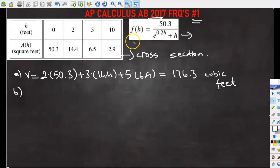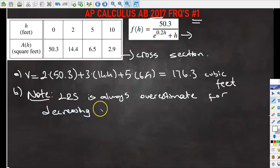So the approximation in part A is an overestimate. Why? Because left Riemann sum is always overestimate for decreasing functions. Because in the original problem it says the function A is continuous and decreases. So the left Riemann sum is always overestimate for decreasing functions. So that's why it is overestimate.